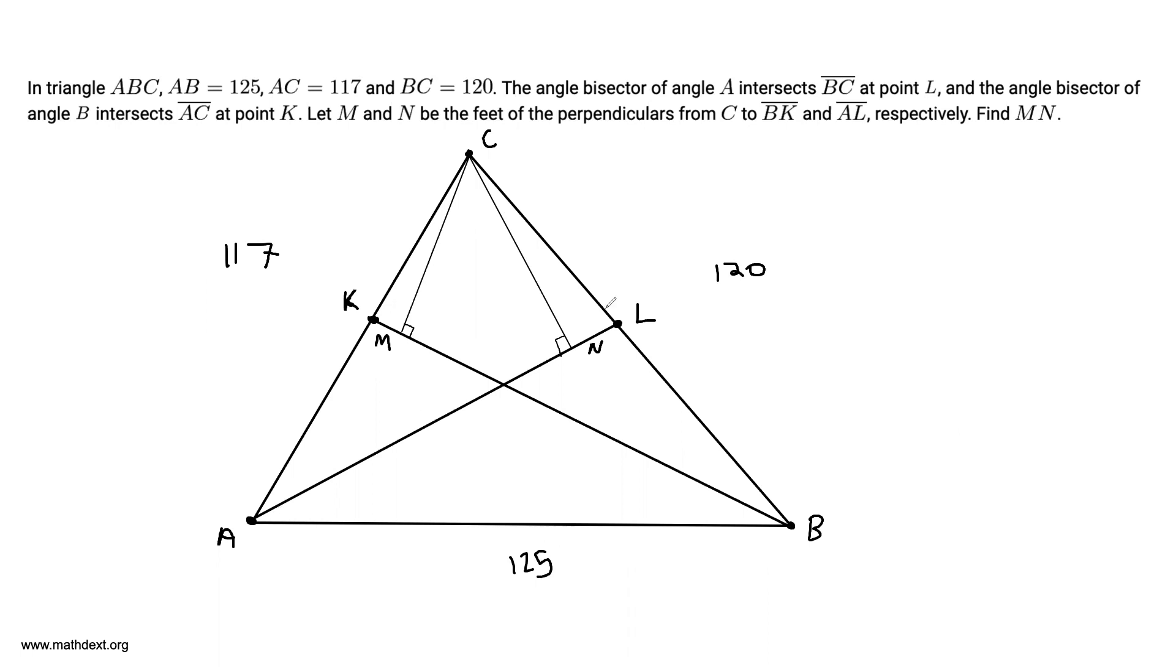AL is the angle bisector of angle CAB. We have this angle and this angle are equal to each other. Similarly, BK is the angle bisector of angle CBA. This angle is equal to this angle.